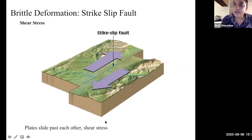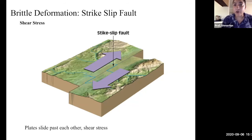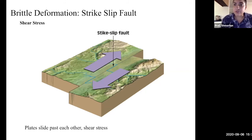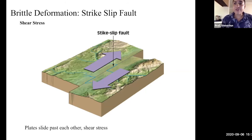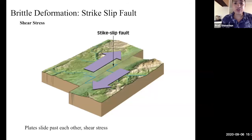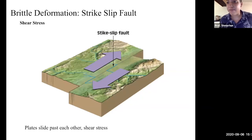The last type of fault orientation is a strike-slip fault. A well-known example close to us in Southern California is the San Andreas Fault. In a strike-slip fault, the two blocks are sliding past one another, and this occurs under shear stresses. So the three main types of faults are normal faults, reverse faults, and strike-slip faults.